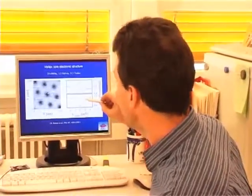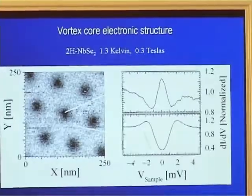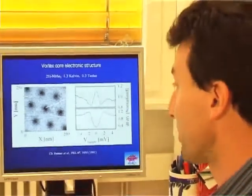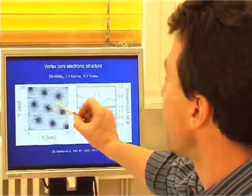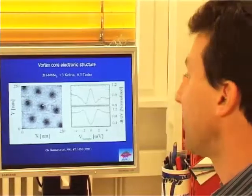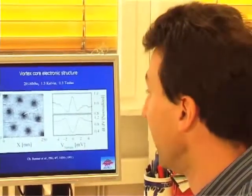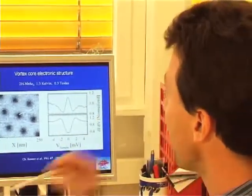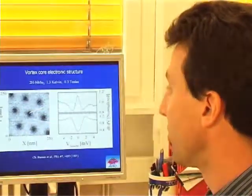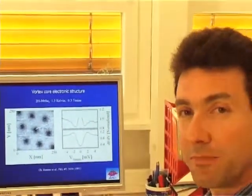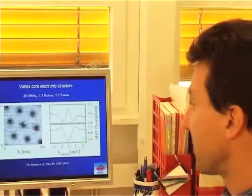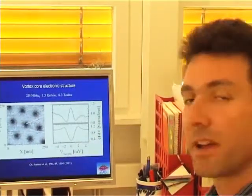Physics is not that simple. These are core states, bound states inside the cores. The core represents a region where the superconducting character is lost, is destroyed. And when you try to inject particles inside the core of the vortex, you get bound states because of the presence of the superconducting surrounding the core.